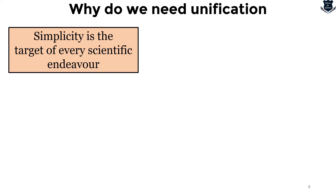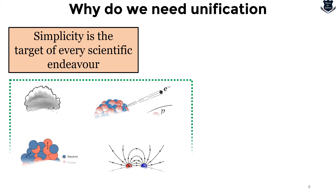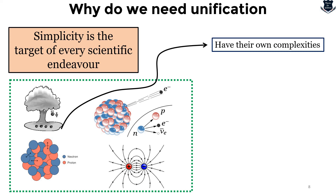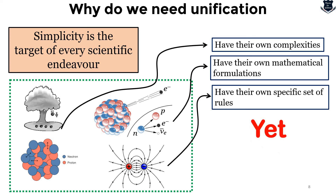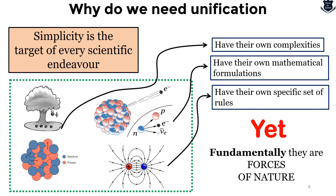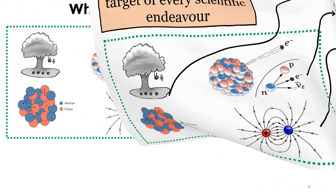The answer is quite simple and obvious: simplicity is the target of every scientific endeavour. Although gravity, electromagnetism, strong force, and weak force are very different in nature with their own complexities and mathematical formulations, one thing is very common — fundamentally, they are all forces of nature. If we can identify fundamental mathematical or physical phenomena, we would be able to simplify the physics and understand them together.